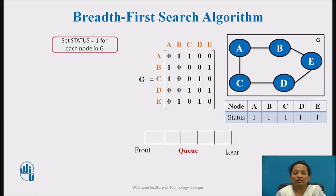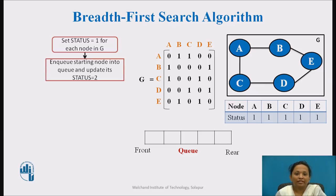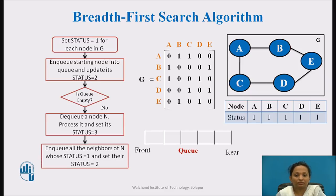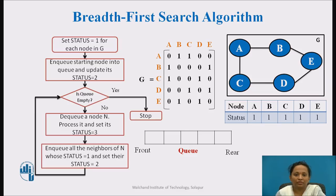The first step is to set the status for each node to 1. Second, enqueue the starting node into the queue and update its status to 2. Then check if the queue is empty — if so, stop. If not, dequeue a node, mark it as visited, and set its status to 3. Then enqueue all neighboring nodes of that dequeued node whose status is 1, and set their status to 2. Repeat this procedure until the queue is empty.